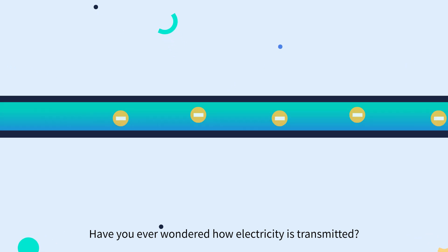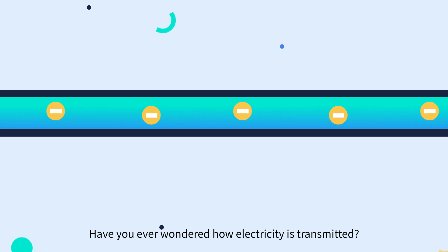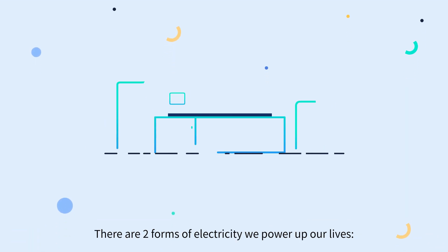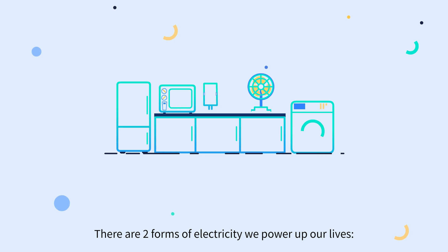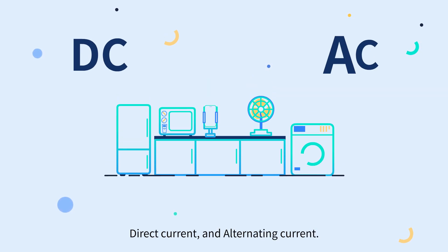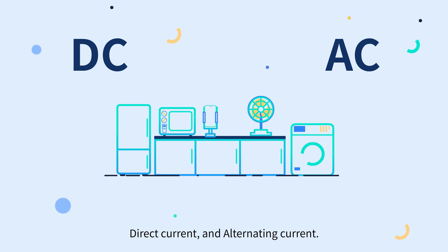Have you ever wondered how electricity is transmitted? There are two forms of electricity we use to power up our lives: DC, direct current, and AC, alternating current.